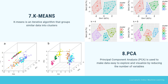The next unsupervised learning algorithm is Principal Component Analysis, or PCA. It is used to make data easy to explore and visualize by reducing the number of variables. This is done by capturing the maximum variance in the data into a new coordinate system with axes called principal components.